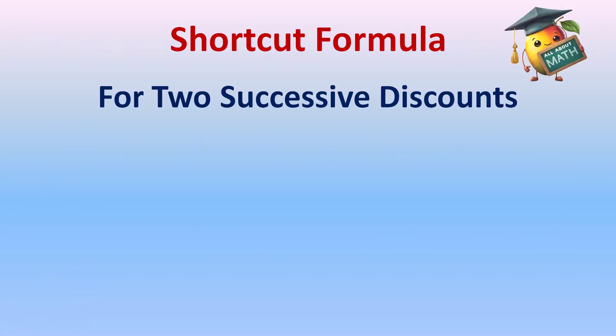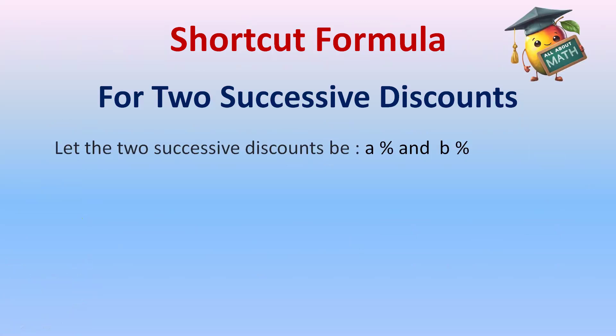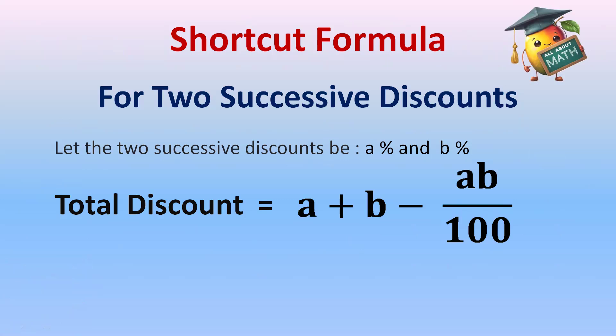First we'll do the shortcut formula for two successive discounts. Let the two successive discounts be a percent and b percent. So the total discount will be a plus b minus ab by 100. We'll use this formula to find the total discount.